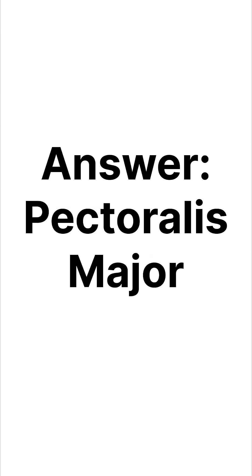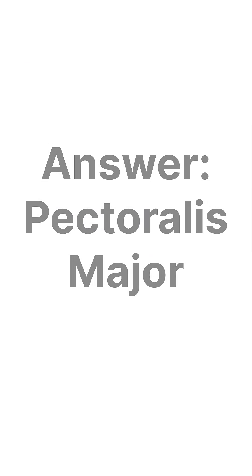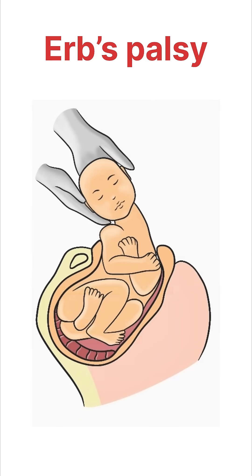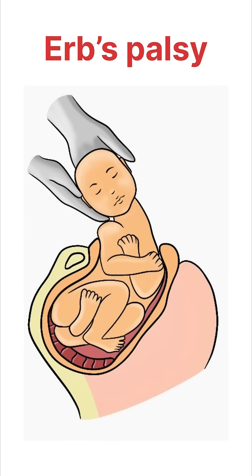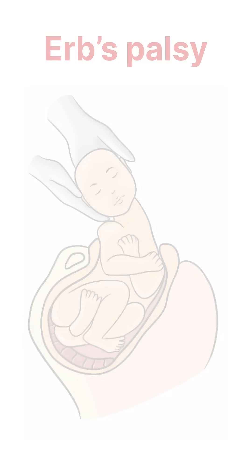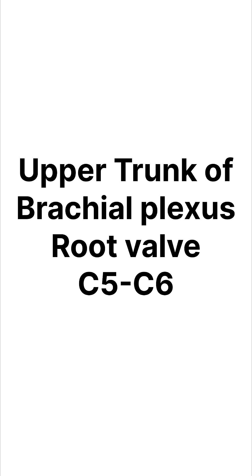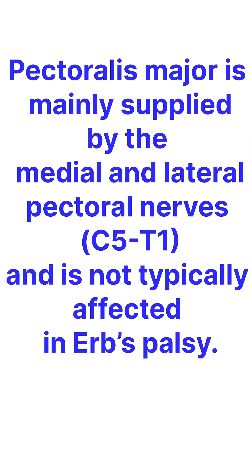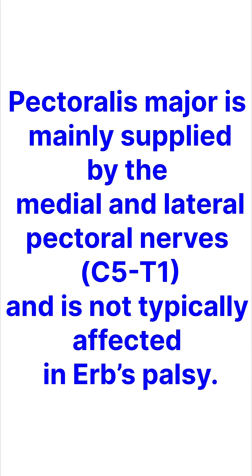The answer is pectoralis major. This is a typical case of Erb's palsy due to excessive traction on the neck during delivery. There is involvement of the upper trunk of the brachial plexus involving root values C5 and C6, and the pectoralis major is not affected typically in this condition. Thank you.